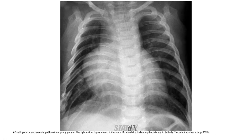Note the massive enlargement of the right atrium. The radiograph of an enlarged heart in a young patient shows right atrium prominence, and given the findings, trisomy 21 is likely. The infant also had a large atrial septal defect.